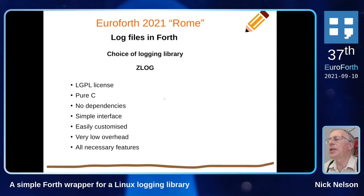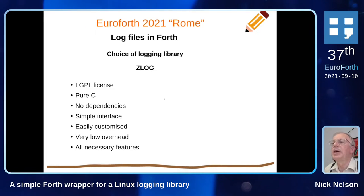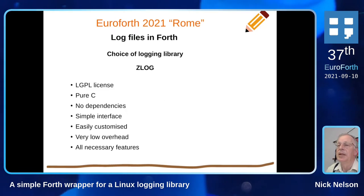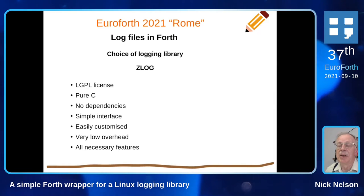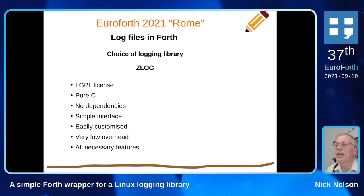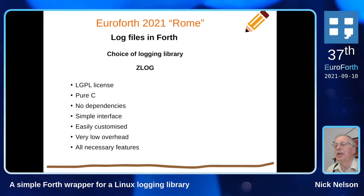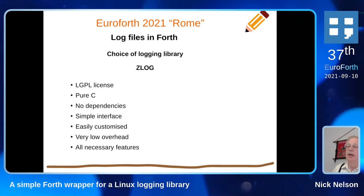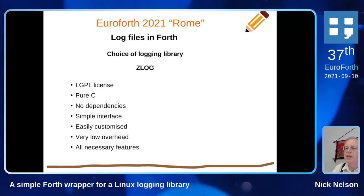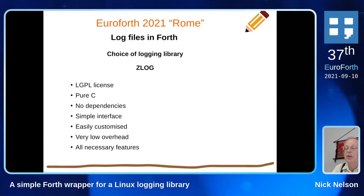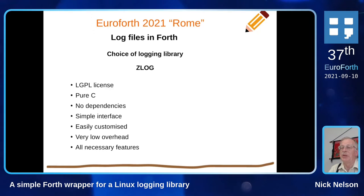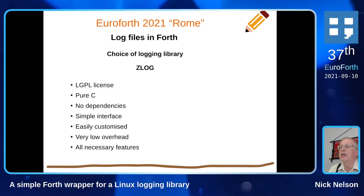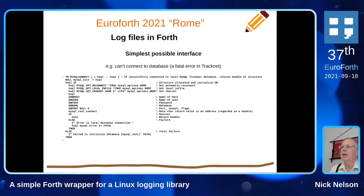There are several contenders for logging libraries and we chose zlog for these reasons: it has a good license, the interface is pure C so we can easily connect to it from Forth, it has no dependencies, it's easily customized so we can report on exactly the right items, and it doesn't take much computing time at all. You can feel free to put log messages all over the place without any bearing on the performance of your application.